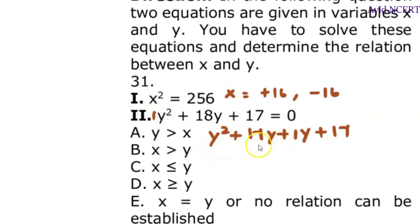The common thing in these two terms is y. Y times y is taken out, so the remaining is y + 17, plus 1 times (y + 17).